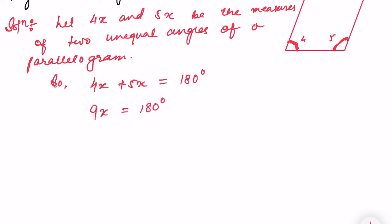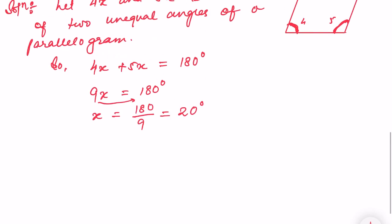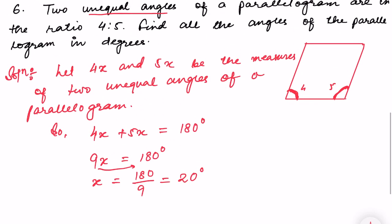4x plus 5x gives us 9x, which equals 180 degrees. So x equals 180 divided by 9, which gives us x equal to 20 degrees.